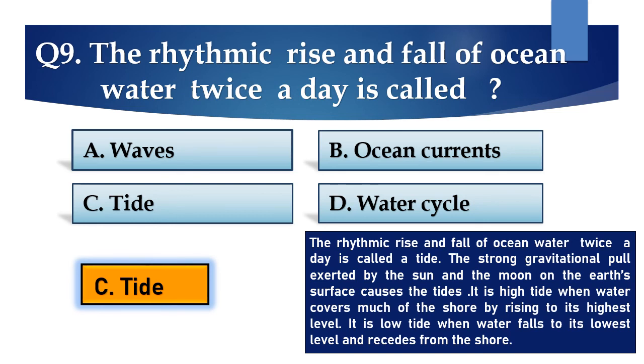The answer is C. Tides. The strong gravitational pull exerted by the sun and the moon on the earth's surface causes the tides. It is high tide when water covers much of the shore by rising to its highest level. It is low tide when water falls to its lowest level and recedes from the shore.